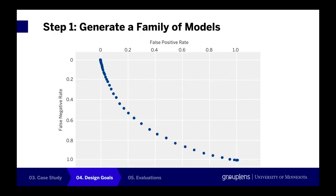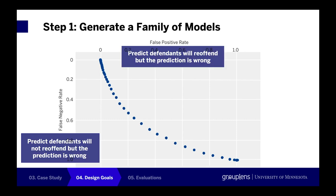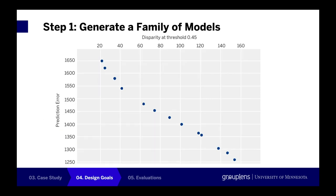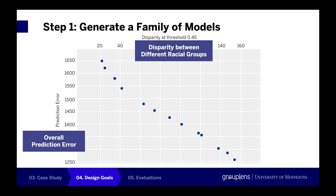For the first two design goals, we varied a classification threshold to capture the trade-offs between false positives — predicting defendants will re-offend when the prediction is wrong — and false negatives — predicting defendants will not re-offend when the prediction is wrong. For the third design goal, we generated a set of Pareto-optimal models to capture the trade-offs between prediction errors and disparities between different demographic groups. Here is the Pareto curve for trade-offs between overall prediction errors and disparities between different racial groups at a specific classification threshold.